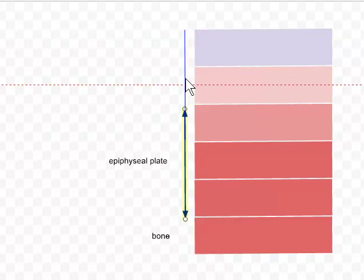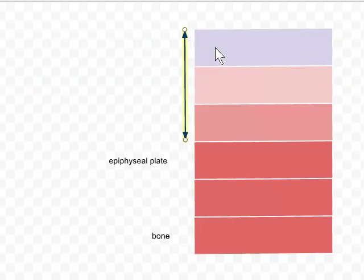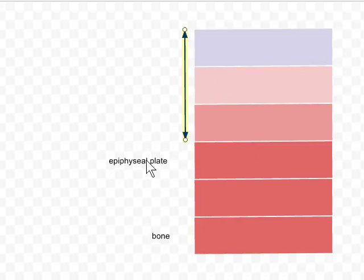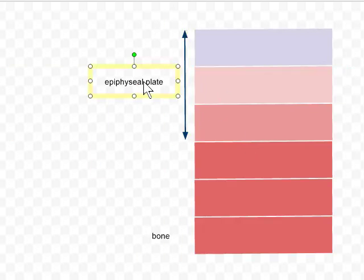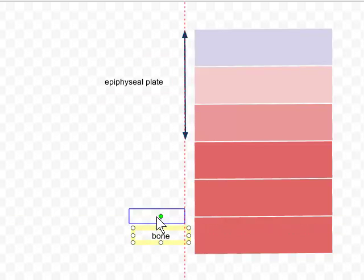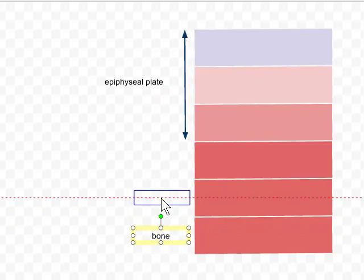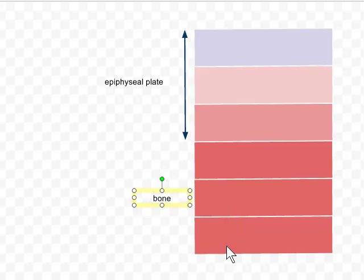we remain with an epiphyseal plate, which is composed of the same zones as it was in the beginning and hasn't increased at all in thickness. So that's the epiphyseal plate. And yet, by the production of cartilage and the conversion of that cartilage to bone, we have significantly increased the length of the bone that's found here.